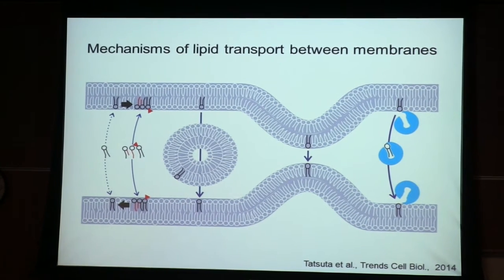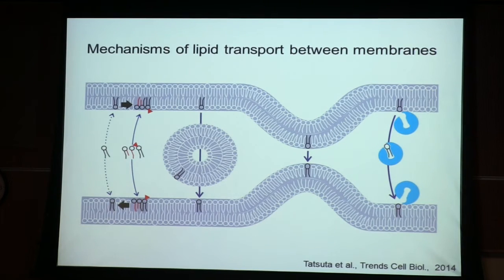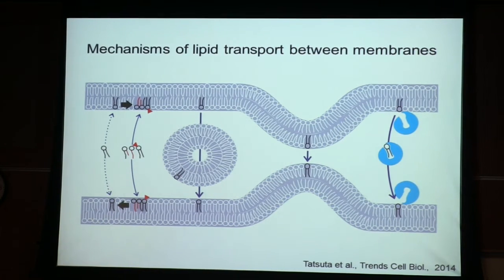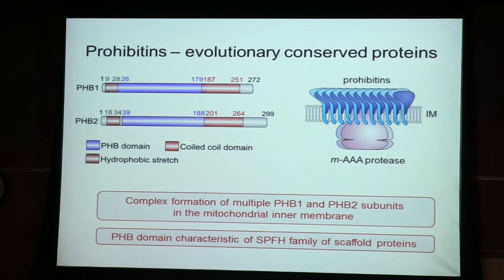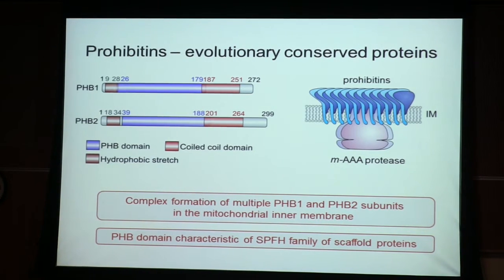How did we get into this? My lab is interested in mitochondrial proteases, and that's not directly linked. For a long time, although we were working on membrane-bound proteases, we didn't think much about lipids. However, we got interested in a protein that we now consider as a membrane scaffold in the mitochondrial inner membrane — the prohibitins — because we identified these proteins in a proteomic approach as a binding partner of the m-AAA protease.